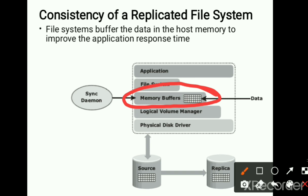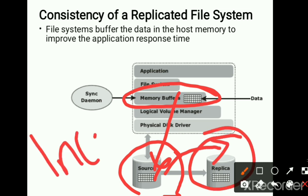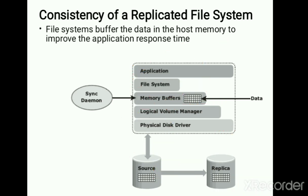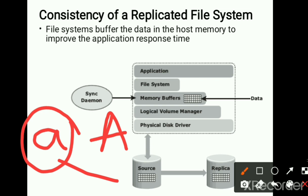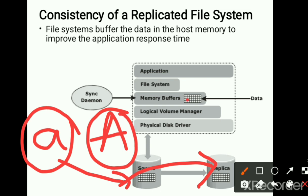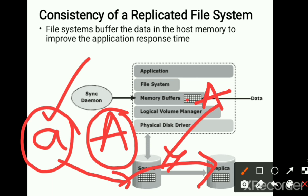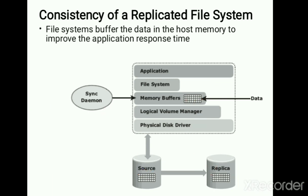If data in the buffer has not been flushed and you perform multiple changes to a file before it is copied to the source device, and then replicate it, the data will be called inconsistent — you will not get the exact copy. For example, if one copy has 'A' and another copy has a different version of 'A', and the buffer is not flushed before replication, the file system will give different images, making the data inconsistent.